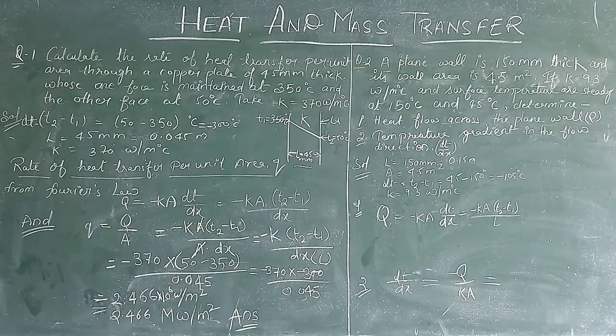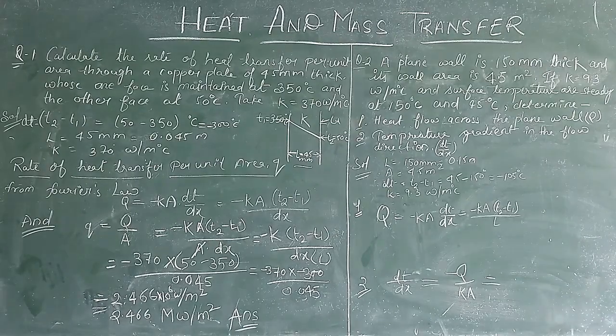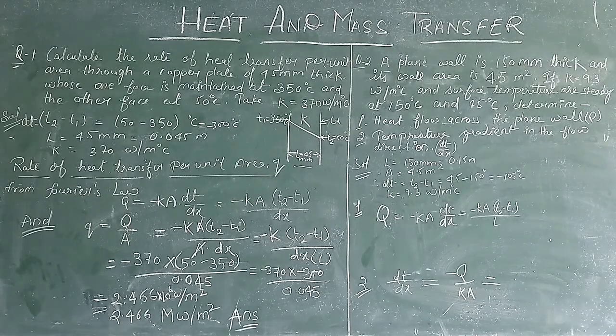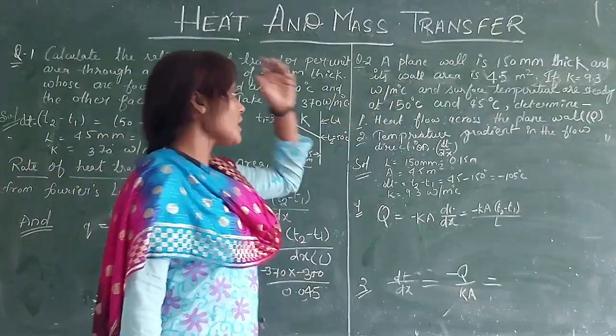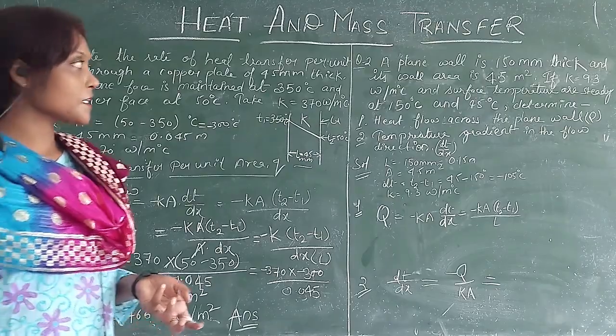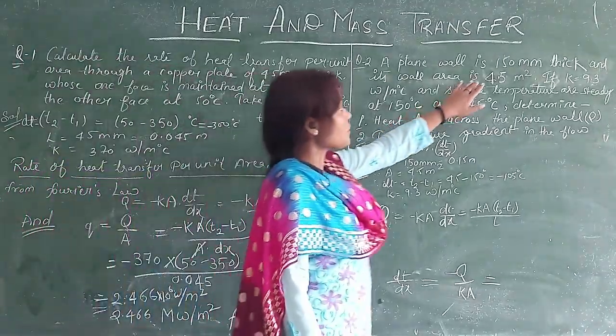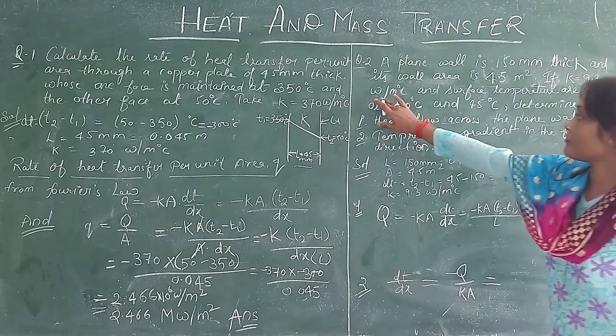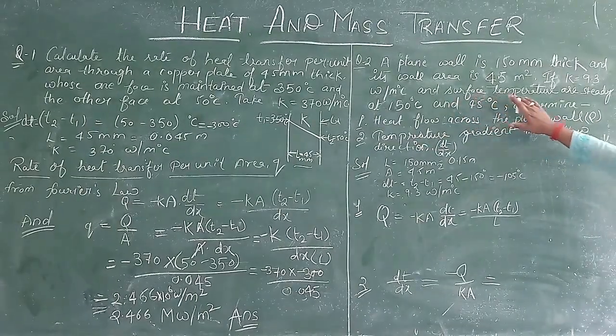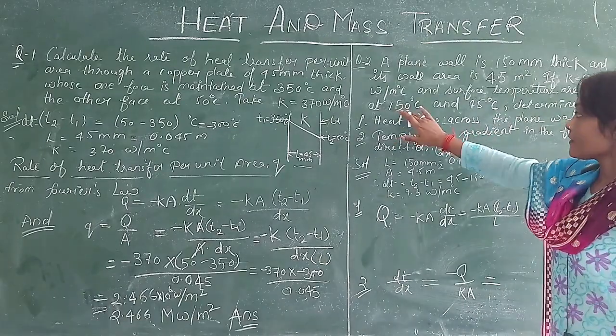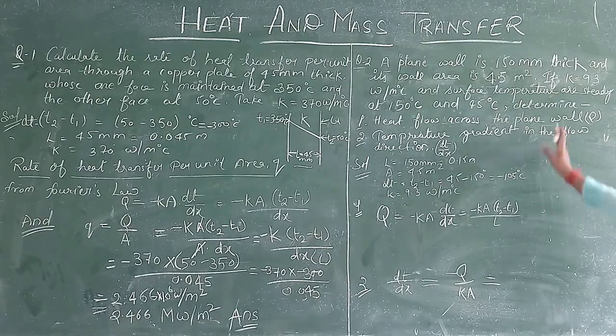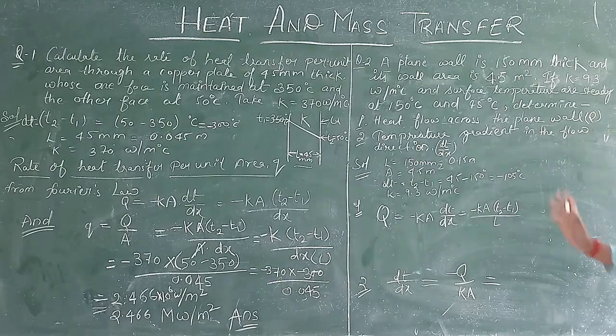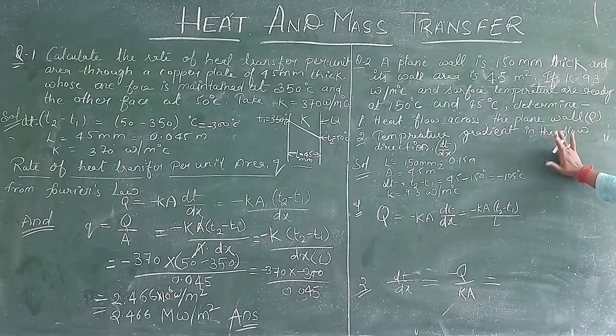Now, my second question is: A plane wall is 15 cm thick and its wall area is 4.5 meter square. If the value of thermal conductivity is 9.3 W per meter degree centigrade, and the surface temperatures are steady at 150 degree centigrade and 45 degree centigrade.